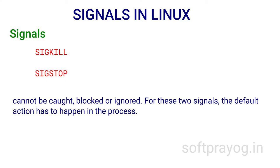There are two signals, SIGKILL and SIGSTOP, which are very important because they cannot be caught, blocked, or ignored. For these two signals the default action has to happen — the default action for SIGKILL is to terminate the process and the default action for SIGSTOP is to stop the process.